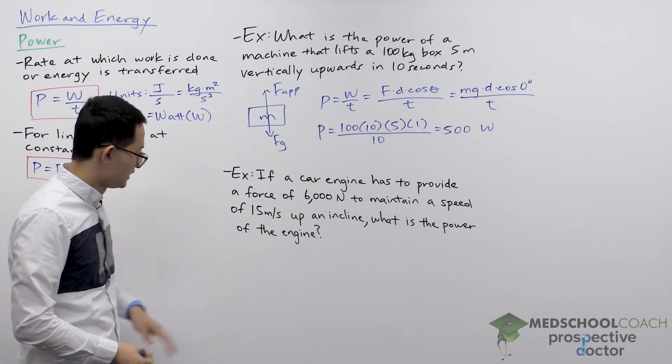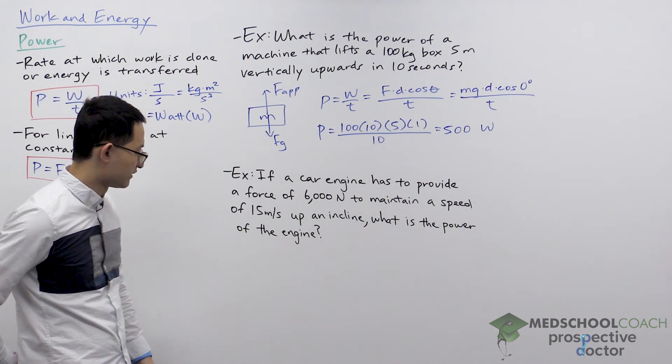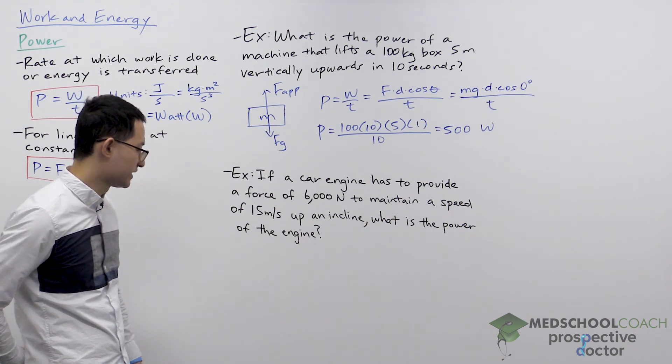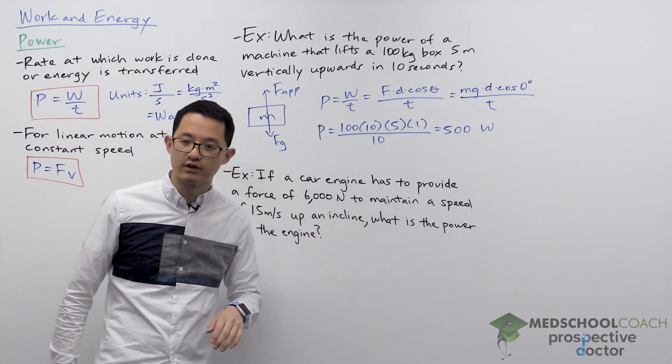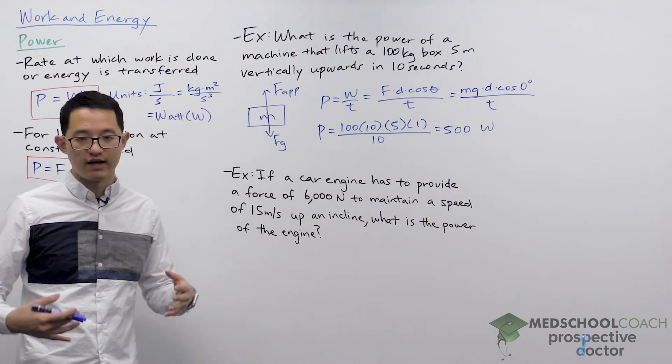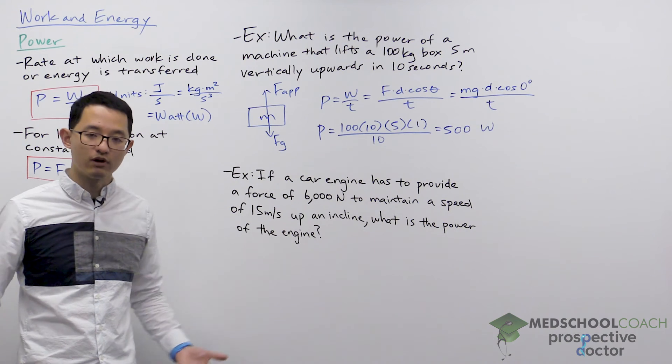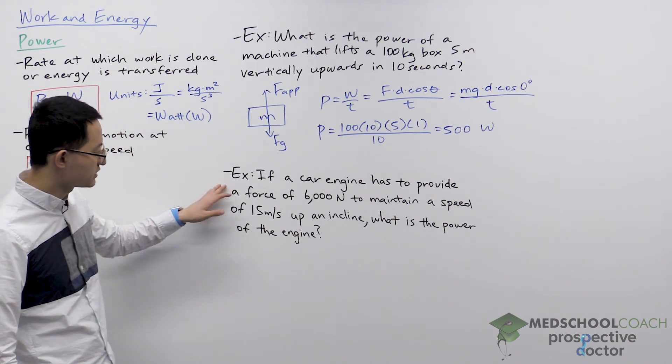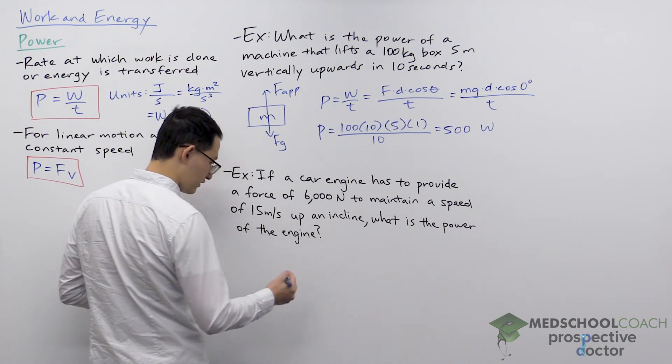Okay, let's take a look at another example here. If a car engine has to provide a force of 6,000 newtons to maintain a speed of 15 meters per second up an incline, what is the power of the engine? All right, so this is a situation where we don't have any time component. We're not given work, but we're given force and velocity. So we can calculate this using our other equation.